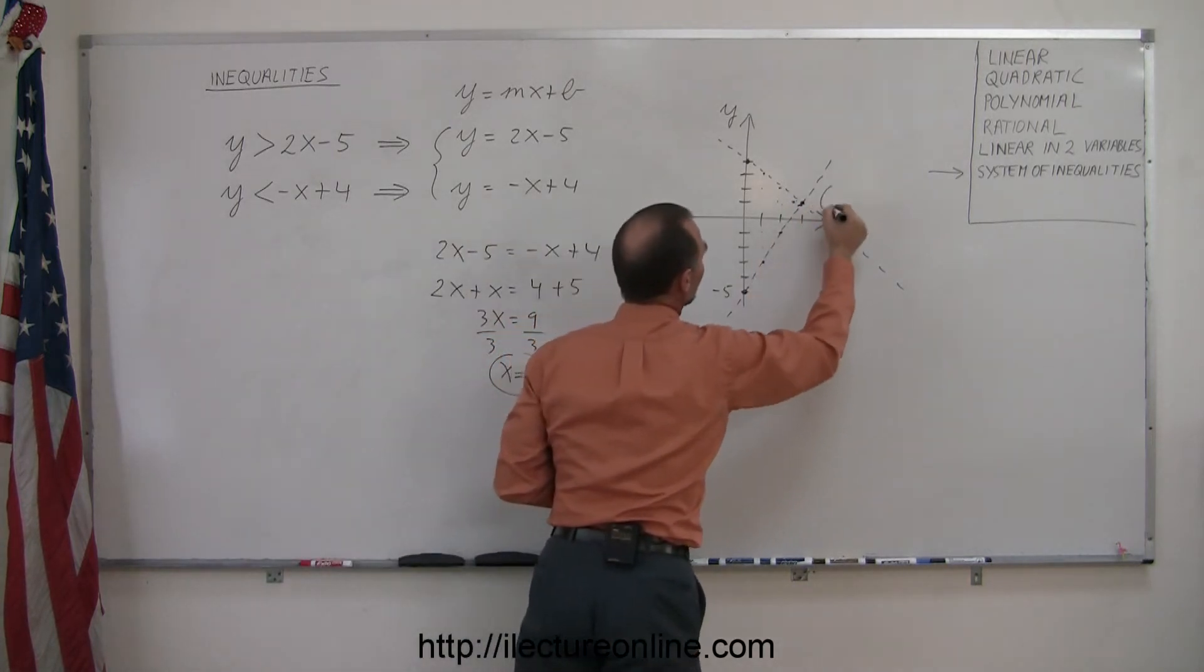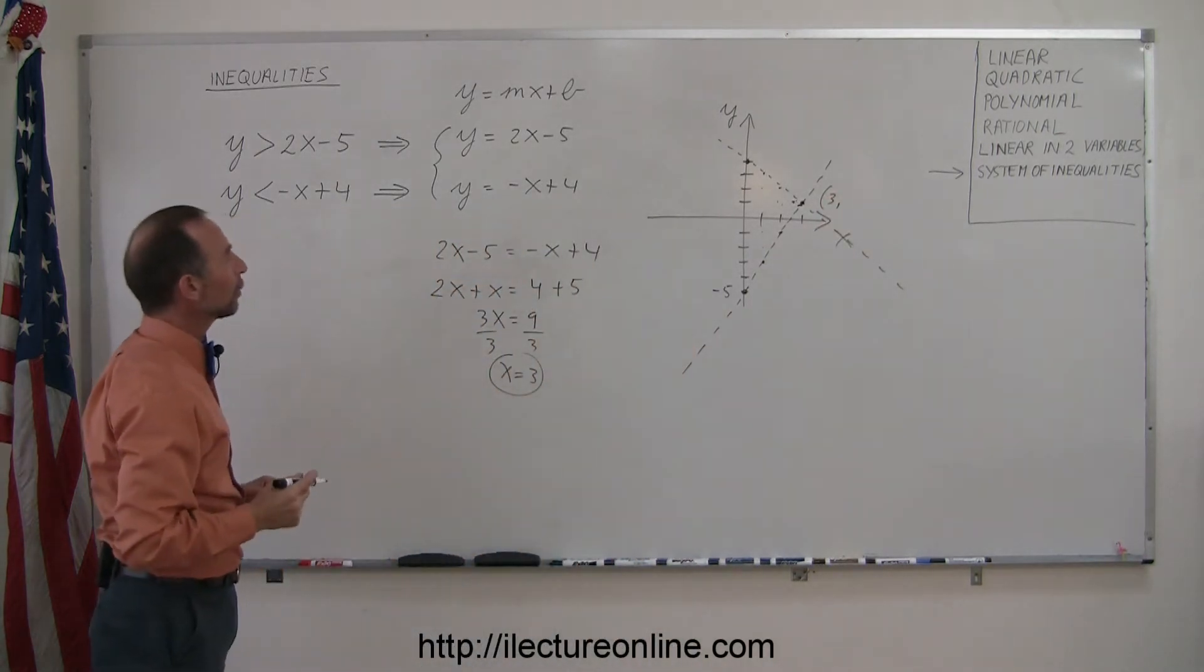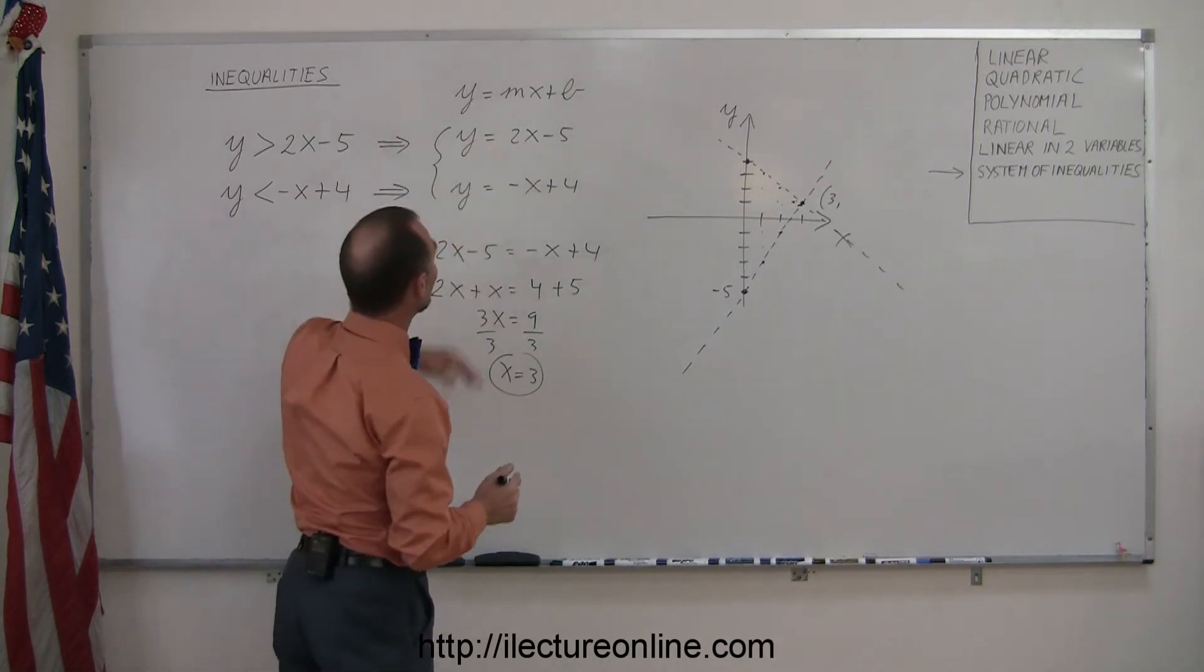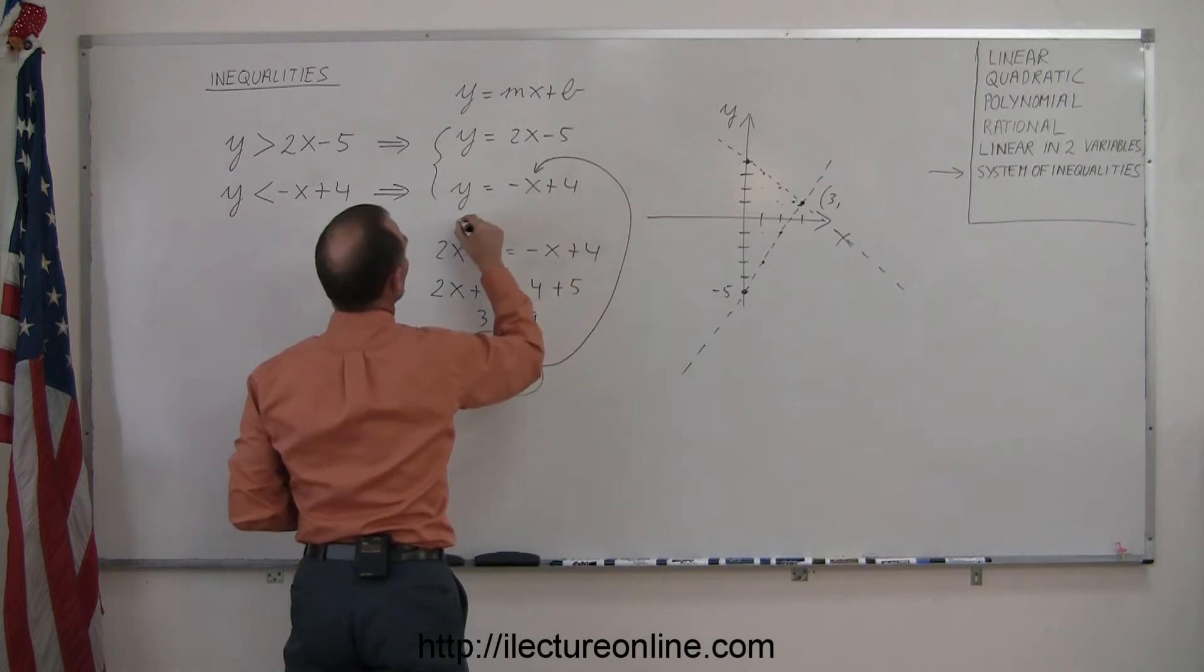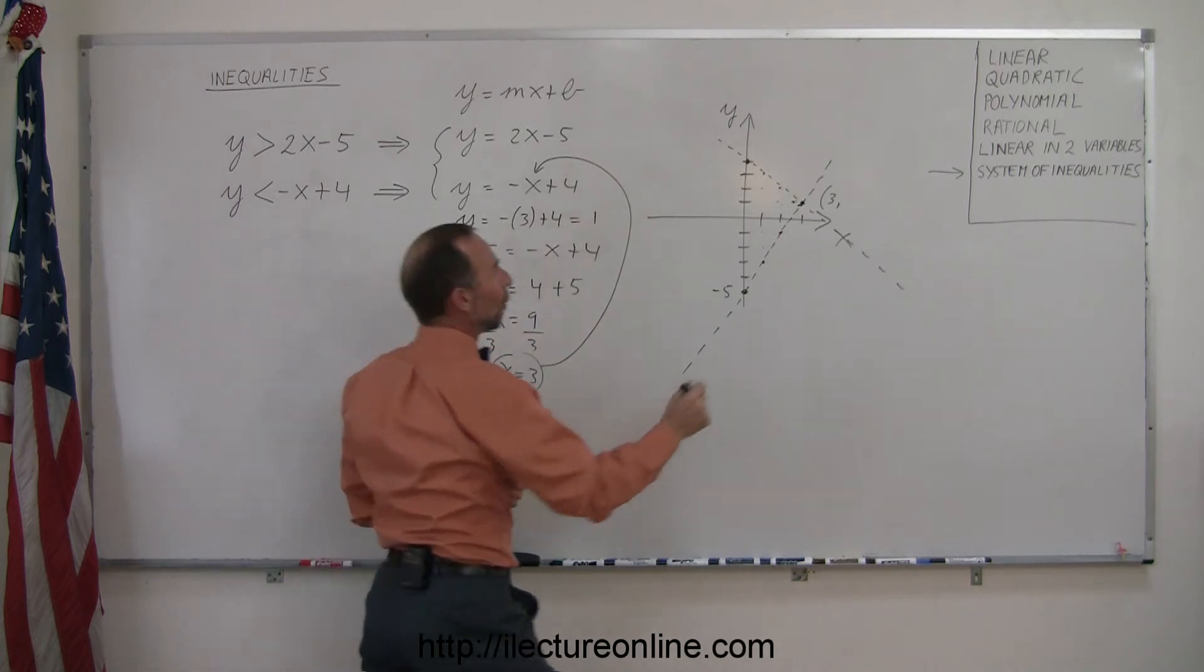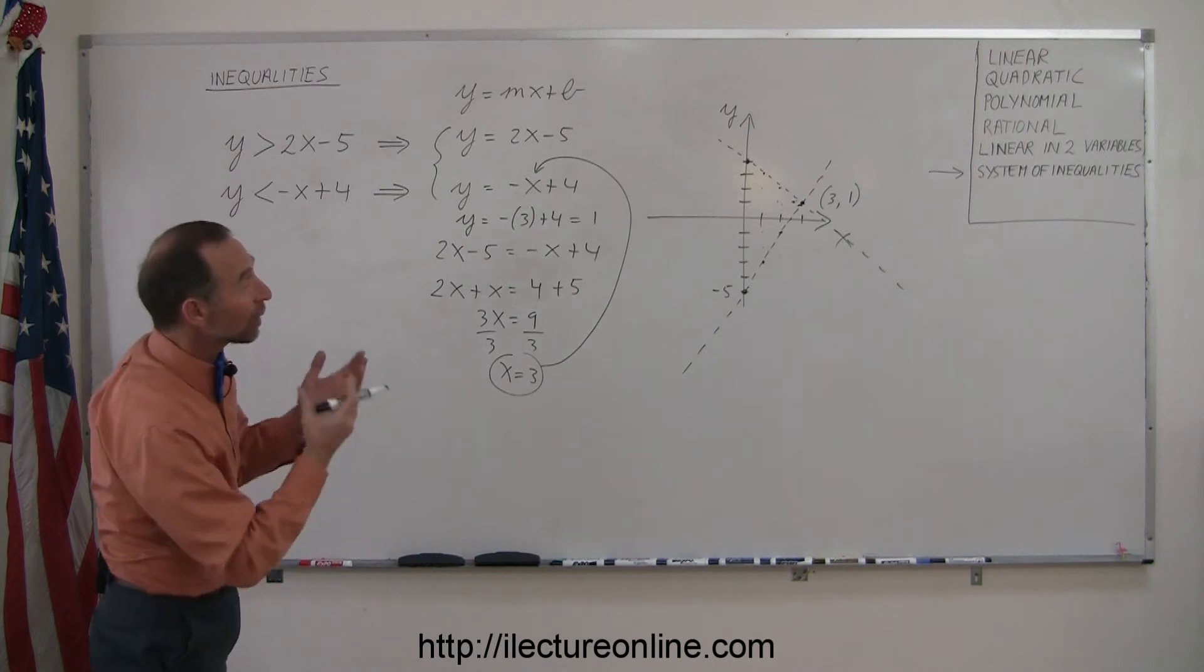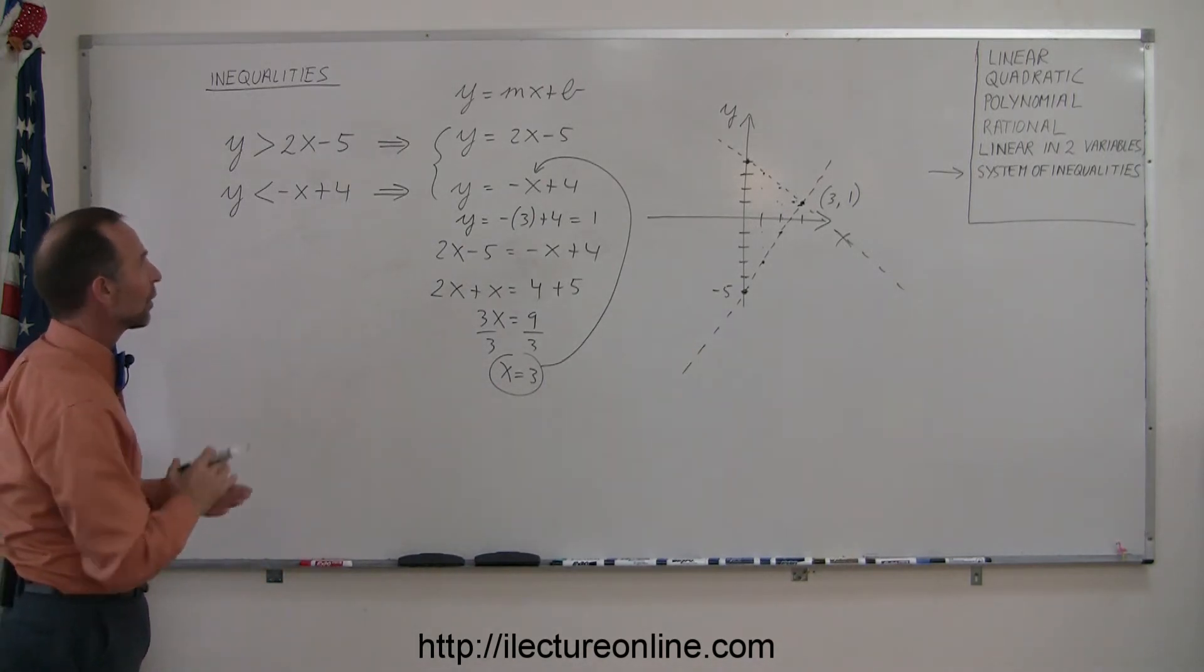So the first coordinate point, x equals 3. To find the y value of that point, we can then plug this value into any one of our two equations. So let's plug it back into this equation. We get y equals minus 3 plus 4, which equals 1. That means the y value of that point is equal to 1. So even though graphically it did look like the point 3 and 1, that way we can make sure.